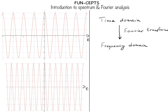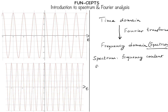So we have three definitions here: first is the time domain representation of the signal; then we have the spectrum, which is the frequency domain representation of the signal; and how we go from time domain to frequency domain is by performing what is called the Fourier transform. Broadly, the spectrum tells us about the frequency content of the signal — that is the information we get from the spectral representation.